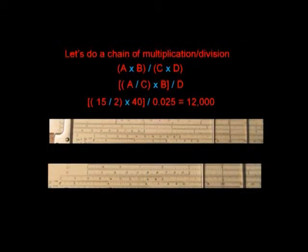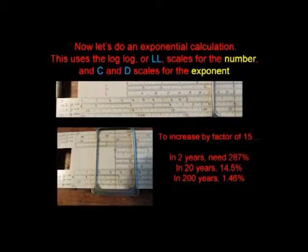Here we're taking the ratio of two products. So we begin with 1.5 is here. We divide by 2 by putting that there. We then multiply by 4 by coming over here under the cursor. Then to do this last division, you slide the 2.5 over there, and over here you read 1.2.